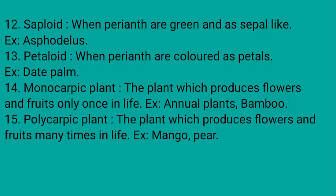Sepaloid: when the perianth is green and sepal-like, the condition is called sepaloid condition. Example: Asphodelius. Petaloid: when the perianth is colored like petals, it is called petaloid condition. Example: date palm.